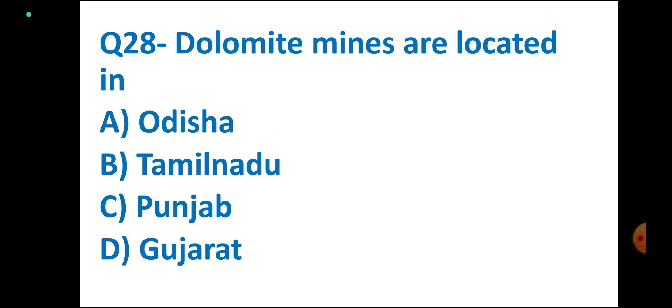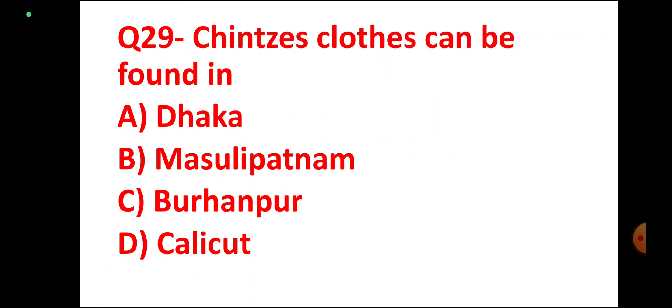Question number 28. Dolomite mines are located in — Odisha, Tamil Nadu, Punjab, Gujarat. Correct answer: Odisha.